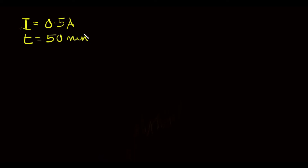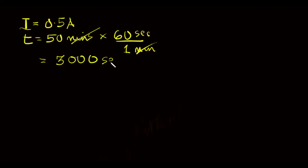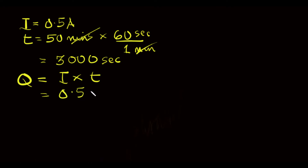For the parameters provided, the current that flows through the three voltameters is 0.5 A. The time of current flow is 50 minutes, so we convert that to seconds, giving 3000 seconds. Therefore, the quantity of electricity that passed through the three voltameters will be the product of current and time, which is 0.5 × 3000, giving us 1500 coulombs.